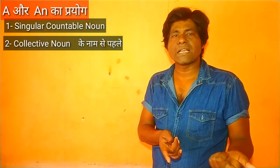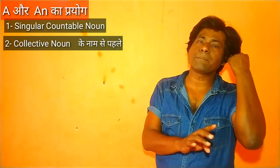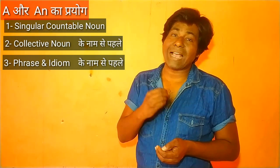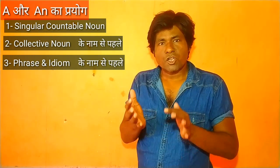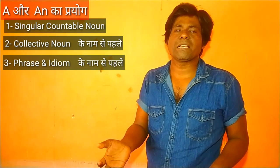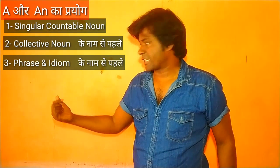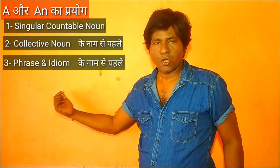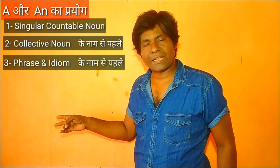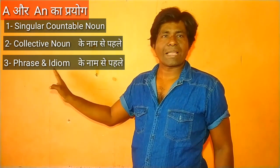Jab collection ka bodh hota hai, samuha ka bodh hota hai, toh aise noun ke naam se pehle hum 'a' ya 'an' ka prayog karte hain. Number 3 — phrase and idiom. Kuch aise muhavare hote hain jiske pehle hum 'a' ya 'an' lagate hi lagate hain, nahi toh woh galat ho jaate hain. Jaise 'a black sheep', uske pehle 'a' aata hai. 'A rainy day' — uske pehle bhi 'a' lagate hain.